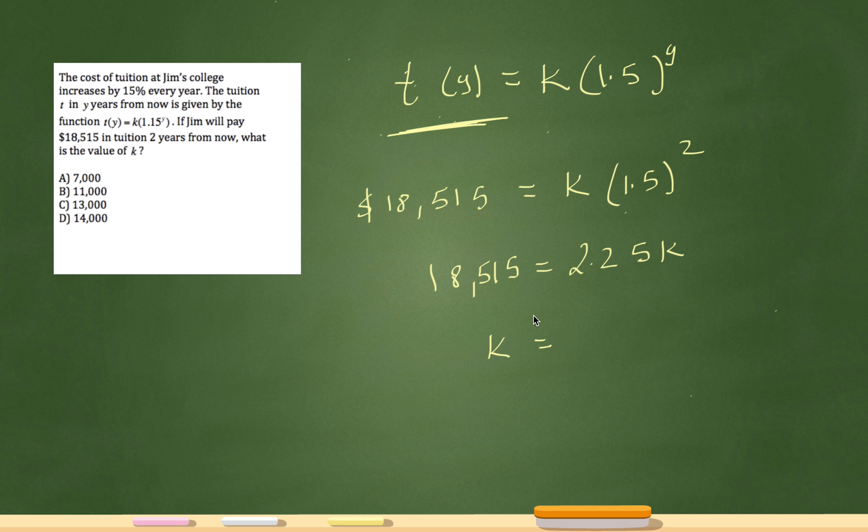Did I mess it up somewhere? I think I did, sorry. $18,515 divided by 2.25. Yeah, see, I don't know if you guys caught me. I messed up right here. It's not 1.5, right? It's 1.15. Sorry about that.